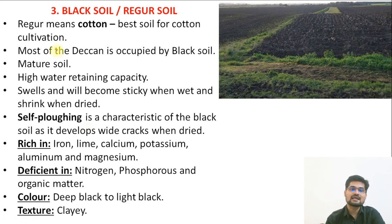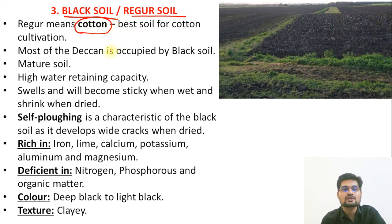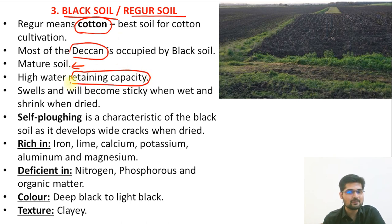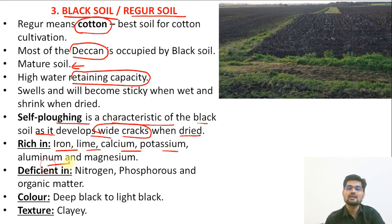The third type is the very famous black soil, also called the Regur soil. Regur is the word for cotton, so it is best for cotton growth. It is a mature soil with high water retention capacity. Self-plowing is a characteristic of black soil as it develops wide cracks when it dries up. It is rich in iron, lime, calcium, potassium, aluminium, and magnesium but deficient in nitrogen, phosphorus, and organic matter.